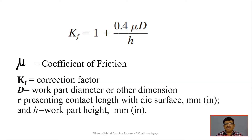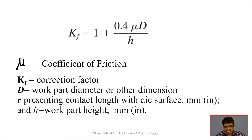The correction factor K_f = 1 + 0.4 · μ · (D / h), where μ is the coefficient of friction, D is the work part diameter, and h is the work part height in millimeters. This correction factor accounts for friction effects between the workpiece and die surface.